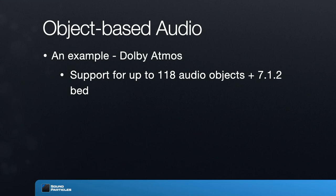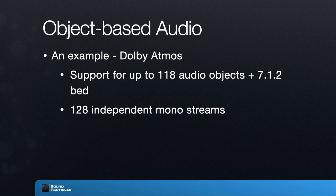The bed essentially allows you to also have channel-based audio alongside objects. If you already have something pre-mixed in 7.1, you can use that directly. So 118 objects plus the 10 channels needed for the 7.1.2 bed means Dolby Atmos is able to send 128 mono streams of audio to the final theater. During reproduction the system supports up to 64 independent channels, meaning up to 64 speakers each playing completely different things.